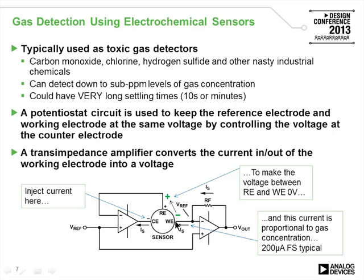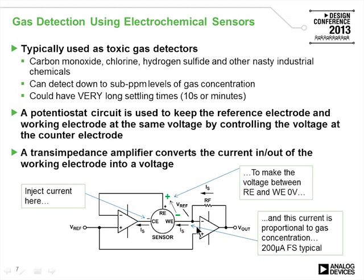This forces the reference and working electrode to zero volts. The small current that comes out of the working electrode is proportional to the level of the toxic gas — this is done via an electrochemical reaction, so the current is actually generated in the device itself. That current gets converted into voltage using a transimpedance amplifier as a current-to-voltage converter. Typically, full-scale output currents for these sensors are about 200 microamps.